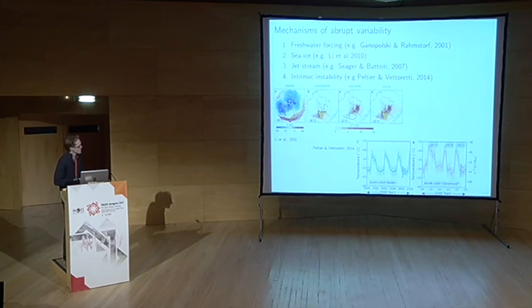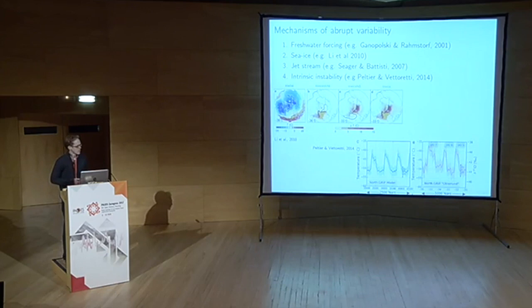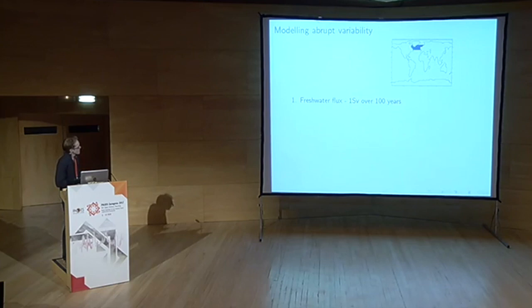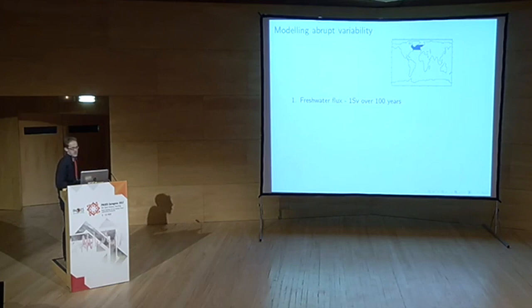Two approaches were tried. The first is a freshwater hosing experiment using HadCM3 with a generic 1 Sv freshwater flux over 100 years into the North Atlantic — a means to perturb ocean circulation and get climate changes over Greenland consistent with the events. The second method focuses only on changes in sea ice, using a modified coupled GCM with a heat flux applied under sea ice to adjust how much sea ice the model simulates without artificially changing SSTs or air temperatures.